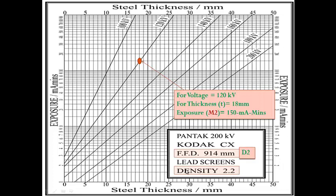The film density will be 2.2. When we intersect the voltage with the thickness on the chart, we get an expiry of 150 mA·min, which we call M2.